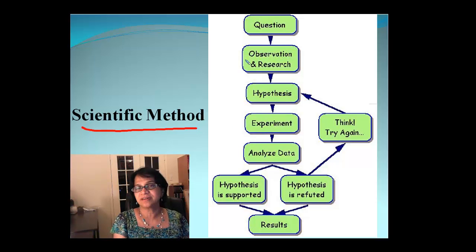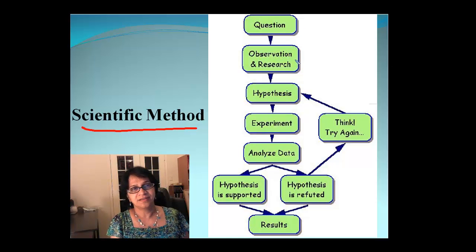And a scientific method has all these components embedded into that. It always begins with a simple question. Then that beginning question leads to some observation or research. An observation could be quantitative or qualitative and we will go over that in a minute. But after you have some observations, you come up with a hypothesis.